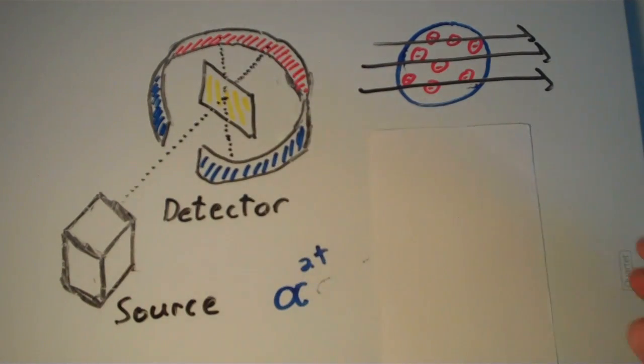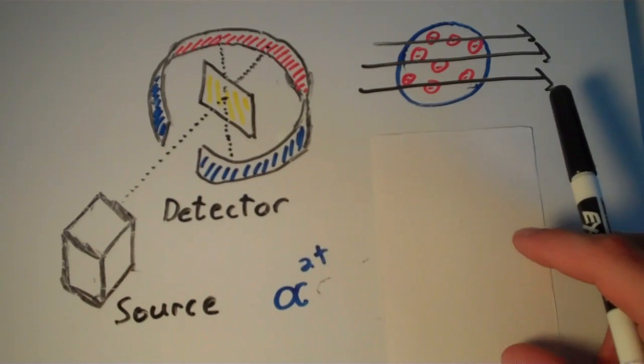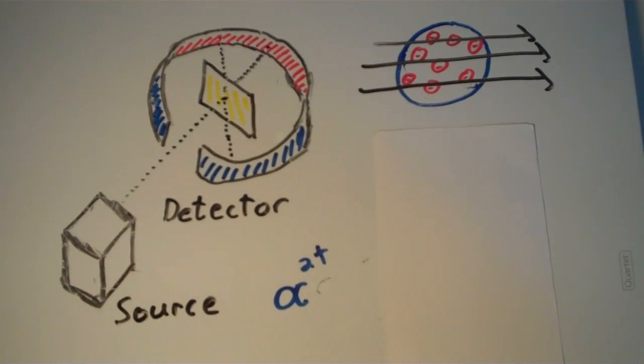So based on this, Rutherford concluded that there must be some localized region that contains nearly all of the mass and all of the positive charge. And today that is what we call a nucleus.